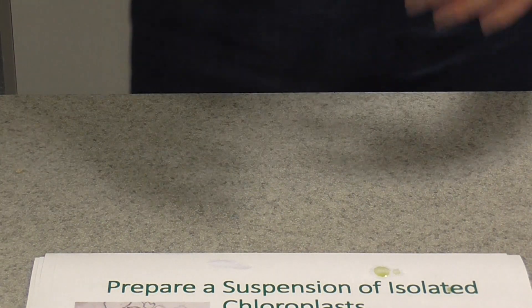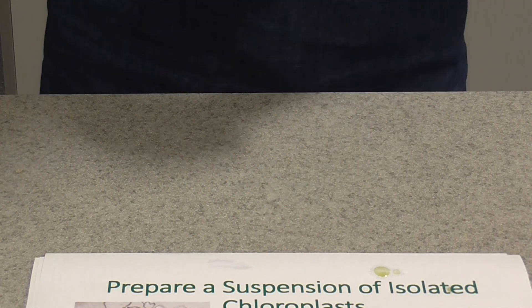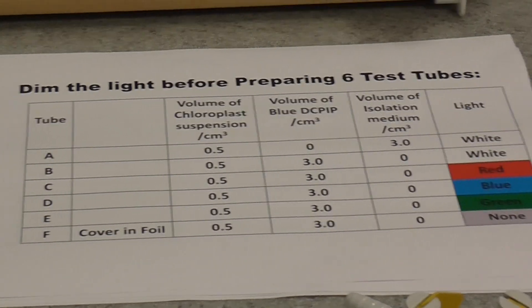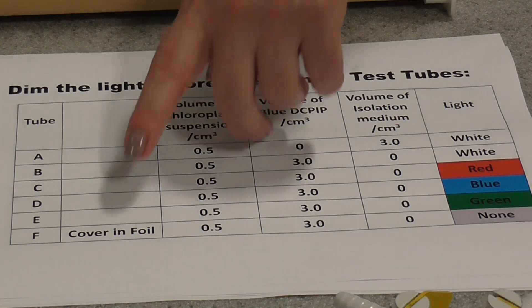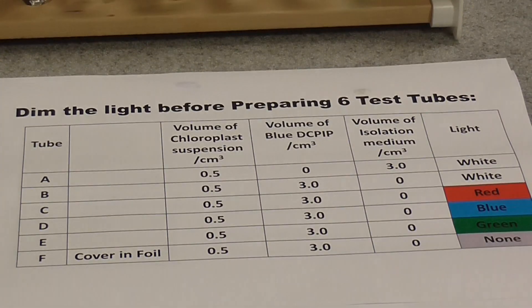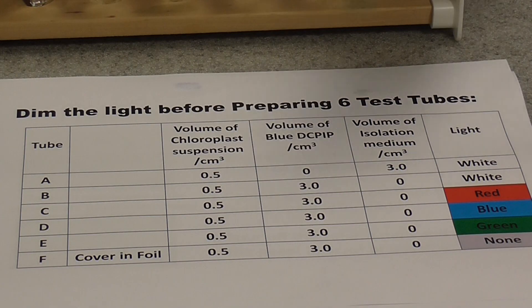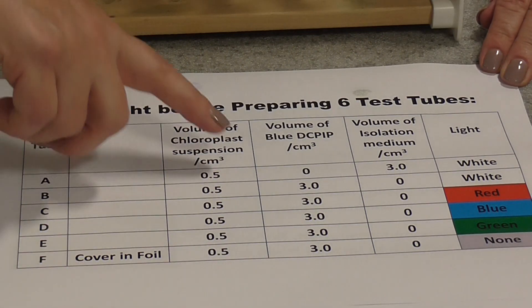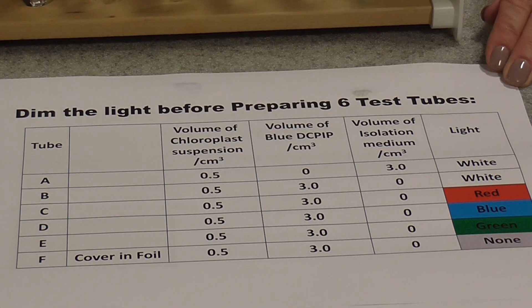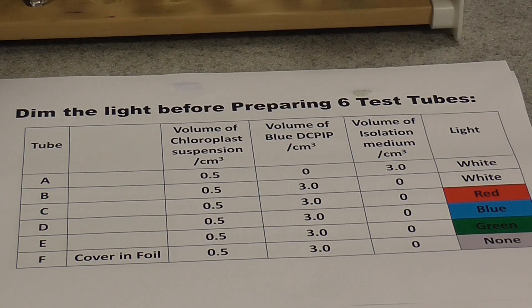While waiting for the chloroplasts to spin in the centrifuge, you can prepare your experimental tubes. You need six test tubes labelled A to F. Tube F needs to be covered in foil because it's our control — it's going to be kept in the dark. Once you've made your chloroplast suspension, turn down the lights, because as soon as you expose the chloroplasts to light the light-dependent reaction will begin. Use different syringes to add 0.5 centimetres cubed of chloroplast suspension to tube A along with three centimetres cubed of isolation medium.